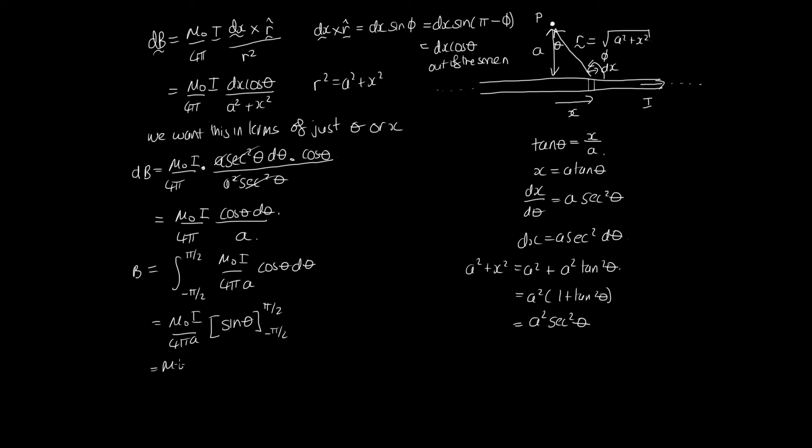from minus pi on 2 up to pi on 2. And then we can just substitute these in and we've got mu naught i over 4 pi a when we substitute in sine pi on 2 minus sine of minus pi on 2. And so this is equal to mu naught i over 4 pi a and then this is 1 and this is minus minus 1. And so we end up with 2 mu naught i over 4 pi a and the 2 will cancel part of the 4 and so we'll end up with mu naught i over 2 pi a and we have our direction up here out of the screen.